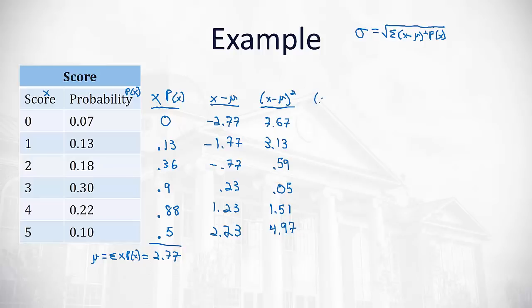We're almost done. We just have to take that value of x minus μ squared, and this time we're going to multiply it by its probability. So we're going to take this last column that we just found and multiply by the probability column.